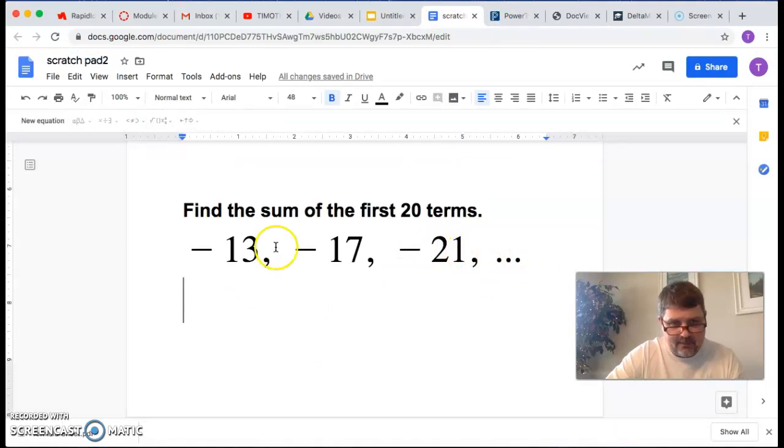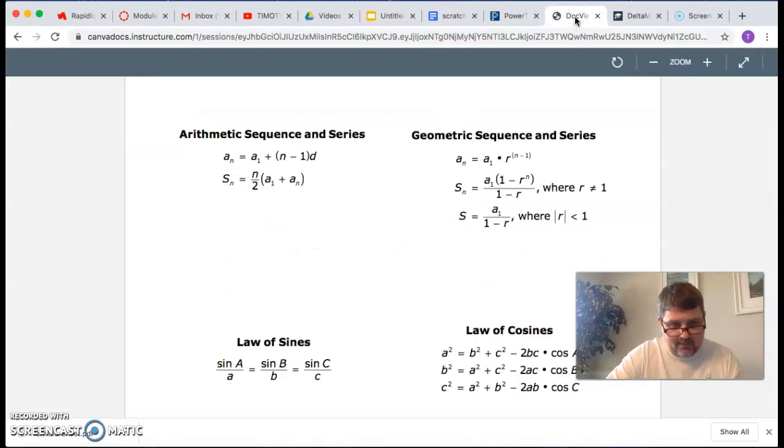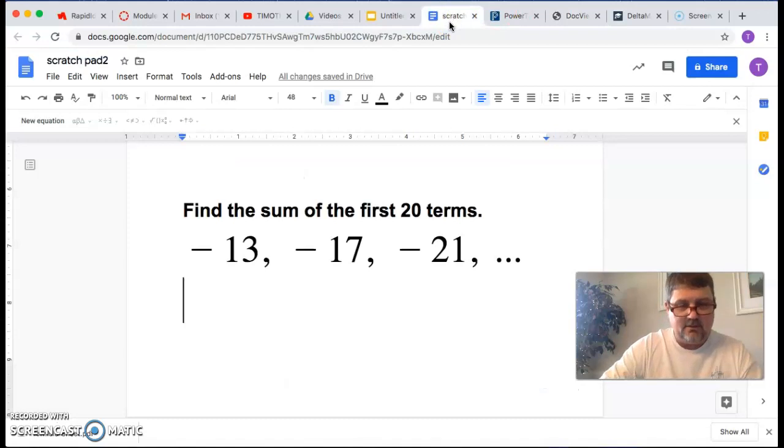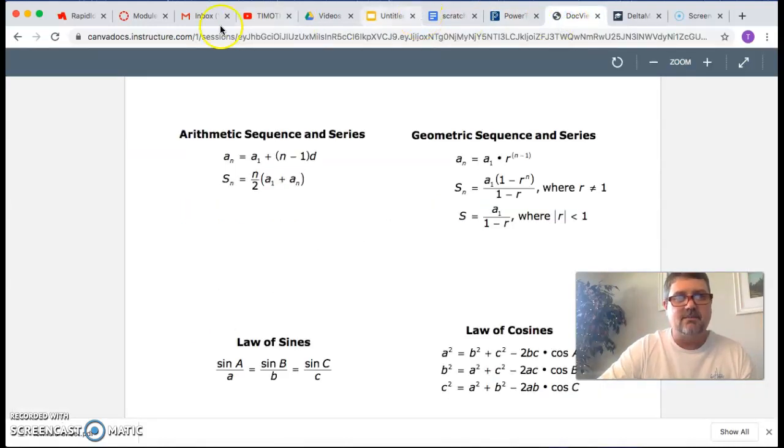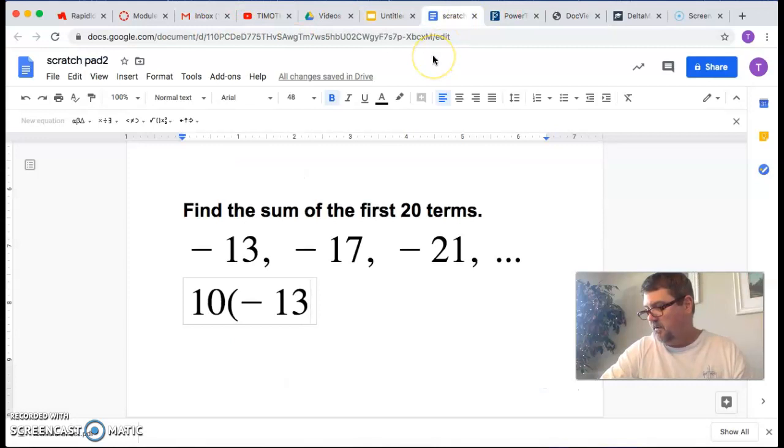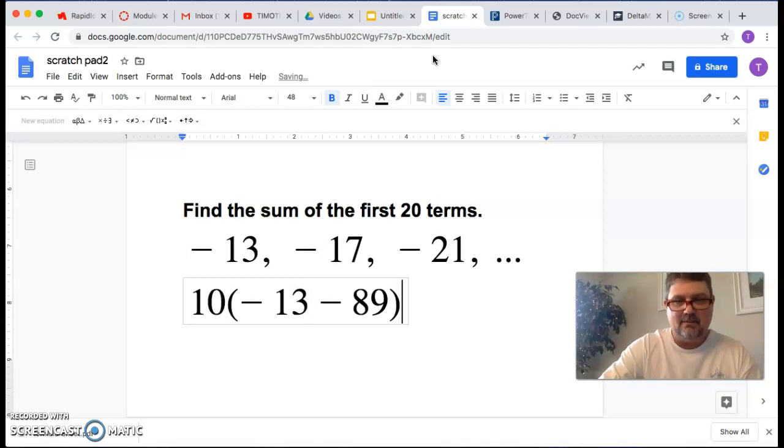If we had to do this by hand using their formula, we'd have to say n over 2, which would be 10. That really wouldn't be too awfully bad, would it? Let's see here. We'd have 10, 20 over 2, which is 10. Let's do a little equation editor to look a little better. So we'd have 10 times a sub 1, which is negative 13. And then if you go look at your formula, it says plus a sub n. Now, a sub n we found was negative 89. So it'd be minus 89.